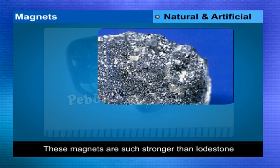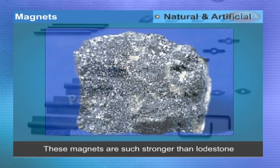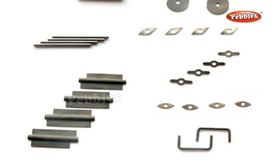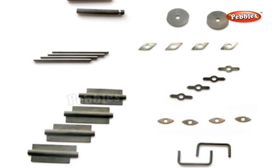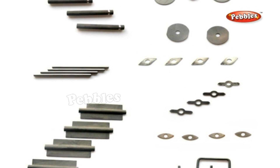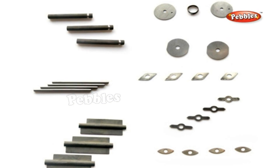Artificial magnets are much stronger than loadstone. Artificial magnets are made in many shapes — they may be rods, flat bars, U-shaped, or like a horseshoe.